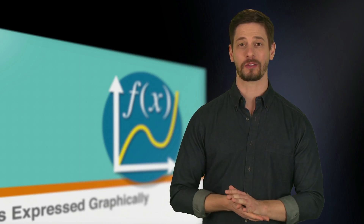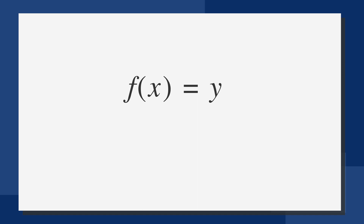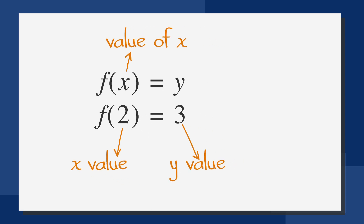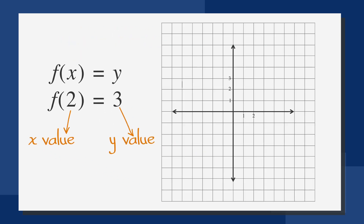When it comes to functions expressed as graphs, f is still the value of y, and the value inside the parentheses is still the value of x. For example, if we were given the expression f(2) = 3, the 2 would be the x value and the 3 would be the y value. And f(2) = 3 is another way of expressing the coordinate (2, 3).